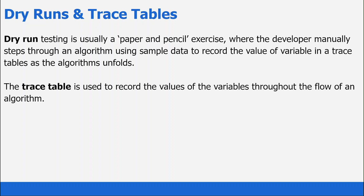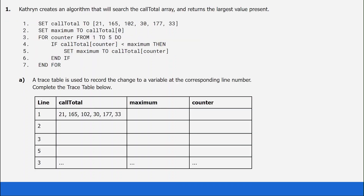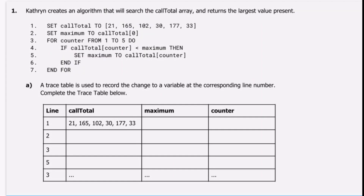Let's have a look at an example question that utilizes a trace table. Here we have Catherine who creates an algorithm which will search the call total array and return the largest value present. Before answering any questions, the first step I always ask myself is: which standard algorithm is in this question? Do we have a find min, a find max, a linear search, or a count of occurrences? In this case we are asked to return the largest value, so that is the clue that this is a find max algorithm.